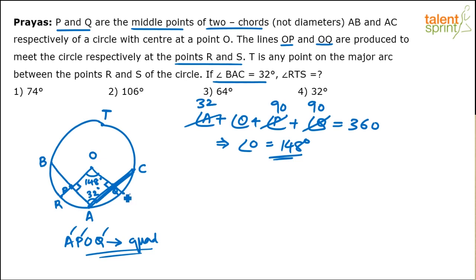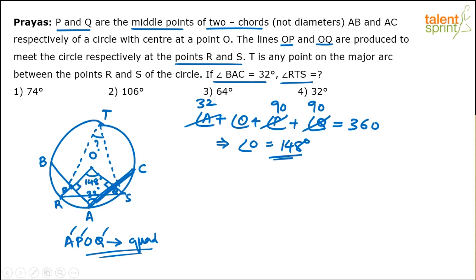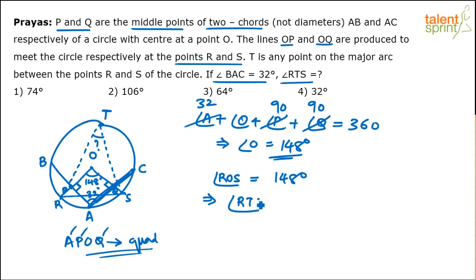Now look at chord RS. The angle made at the center by chord RS is 148 degrees. By the standard circle theorem, the angle made at any point on the circle by the same chord is half the central angle. So angle RTS equals angle ROS divided by 2, which gives 148 divided by 2 equals 74 degrees.